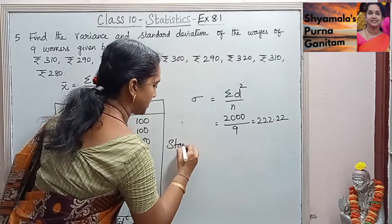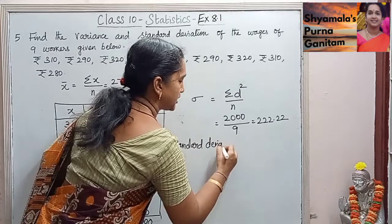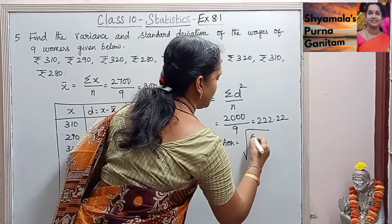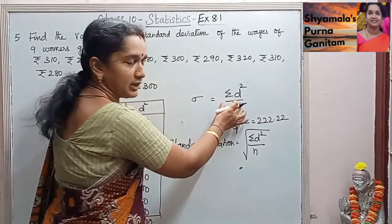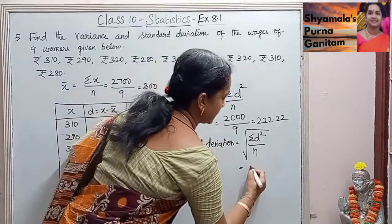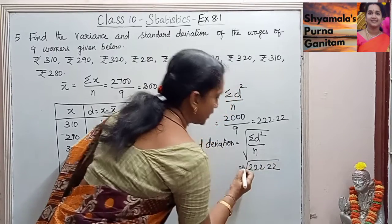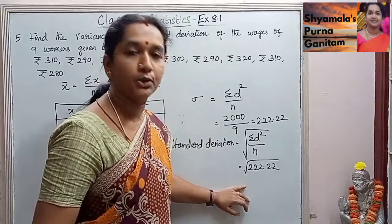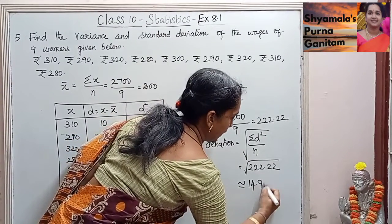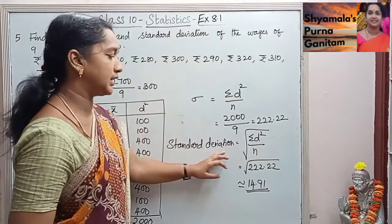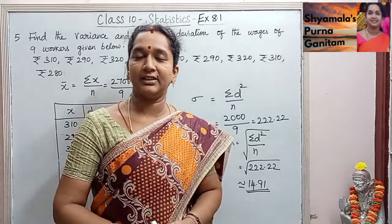The standard deviation is the square root of σd²/n. We already found σd²/n = 222.22, so the square root of 222.22 is approximately 14.9. This is the standard deviation for the given information. Thank you.